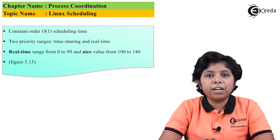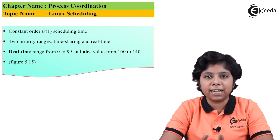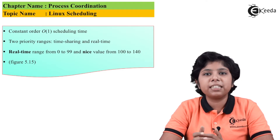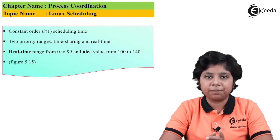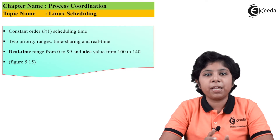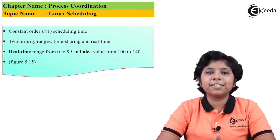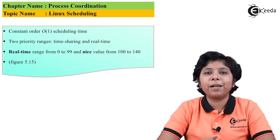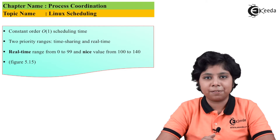The scheduler selects the next process to be executed based on the highest priority task. The highest priority task will run on the CPU over any lower priority task. This task can belong to any scheduling class — one is the default scheduling class provided by the CFS algorithm, and another is the real-time class.